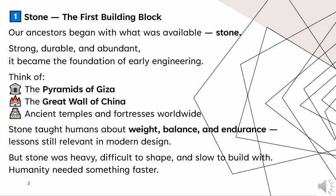Number one: stone — the first building block. Our ancestors began with what was available: stone, strong, durable, and abundant. It became the foundation of early engineering. Think of the Pyramids of Giza, the Great Wall of China, ancient temples and fortresses worldwide. Stone taught humans about weight, balance, and endurance — lessons still relevant in modern design. But stone was heavy, difficult to shape, and slow to build with. Humanity needed something faster.